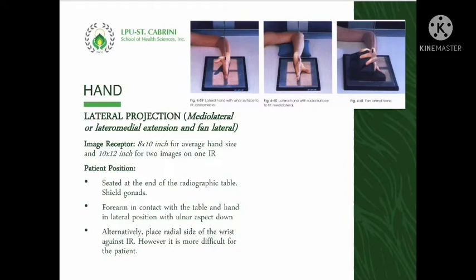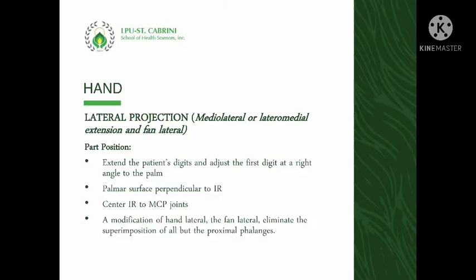The hand lateral projection has two positions: lateral in extension and fan lateral. This projection can be used to localize a foreign body. For lateral in extension, it could be a lateral-medial projection where the forearm is in contact with the table and the hand is in lateral position with the ulnar aspect down, or a medial-lateral projection where the radial surface is placed against the IR, though it is more difficult for the patient. When placing the hand in lateral position, extend the digits and adjust the first digit at a right angle to the palm, making the palmar surface perpendicular to the IR. In lateral in extension, the proximal phalanges are superimposed; the fan lateral modification will eliminate this superimposition.